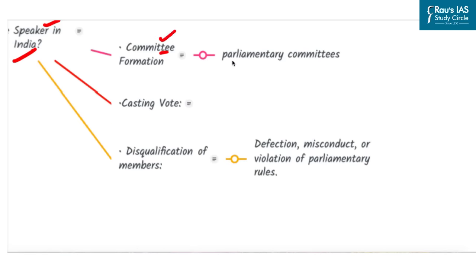Next is committee formation. Speaker appoints the members and chairpersons of various parliamentary committees, such as Committee on Public Accounts, Committee on Estimates and the Committee on Privileges. Next is casting vote. What is this? In case of a tie during voting, Speaker has the power to cast the deciding vote.